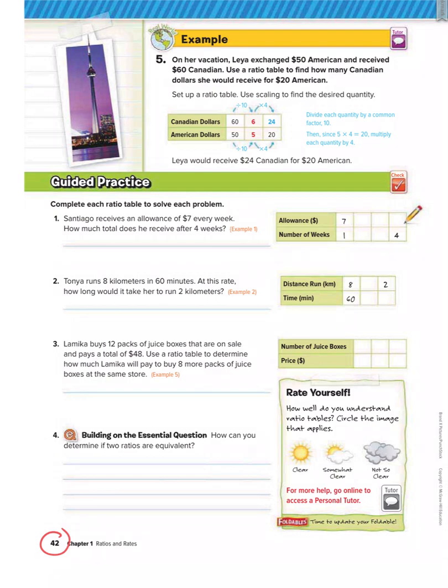So we know that we need equivalent ratios. So we have 7 over 1. So we could fill this in: 7, 14, 21, 28. 1, 2, 3, and 4. So the top row represents his allowance, and the bottom row represents the number of weeks. It wants to know how much does he receive after 4 weeks. So here's 4 weeks. So that means he receives $28 after 4 weeks. So the answer is $28.